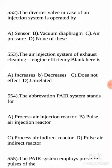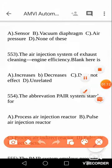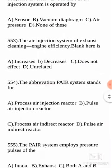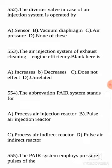Today's first question: the diverter valve in case of air injection system is operated by what? In this video we are mainly concentrating on the PAIR system, which is basically a system of treating the exhaust gases for reducing pollutants. The diverter valve in the air injection system is operated by a vacuum diaphragm.